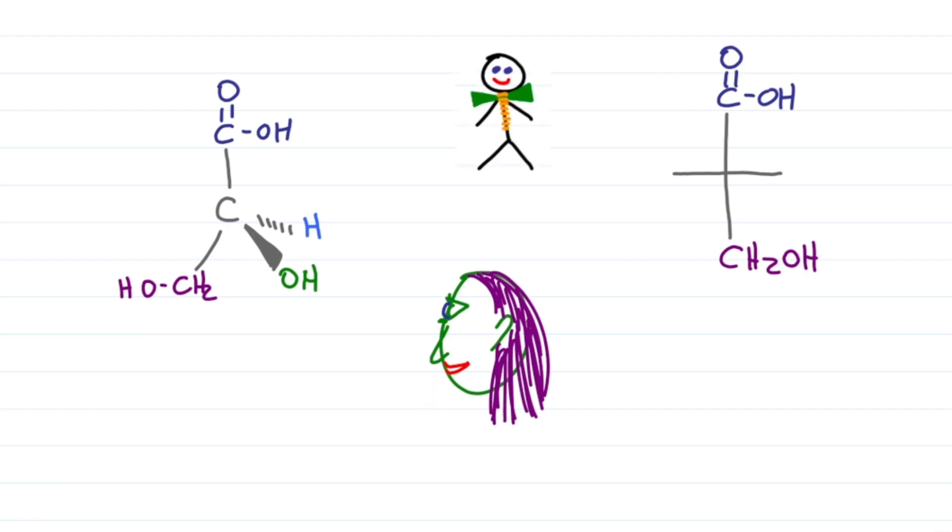Now for the tricky part, the bowtie. As you're looking at this molecule from the side, notice how the blue hydrogen and green OH line up with your eyes. Since the blue hydrogen is going down and into the page, it's closer to your right eye and the green OH is on a wedge coming out of the page, it's closer to your left eye. This is how I know to put the H on the right and OH on the left.